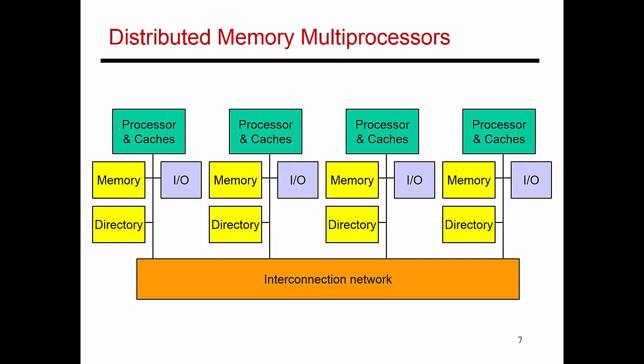Each green box over here shows you a processor connected to its private caches. When you have a miss in the cache, you have some local memory that you're directly connected to. So if you're lucky, you'll find data in your own local memory and you don't have to go out and visit the rest of the system. But if you don't find data in your local memory, then you need to figure out exactly where your data is placed, and then you need to send a specific point-to-point request to that particular node.